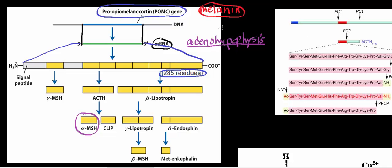The pro-opiomelanocortin product is processed further by enzymes — a series of acetyltransferases and proteases — that clip this long peptide into individual fragments, each with their own function. Two important ones are alpha-MSH and ACTH. ACTH, or adrenocorticotropic hormone, goes to the zona fasciculata of the adrenal cortex and upregulates the enzymes involved in cortisol synthesis, resulting in an increase in cortisol released into the blood.